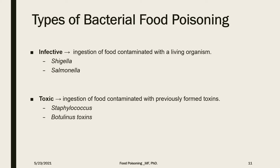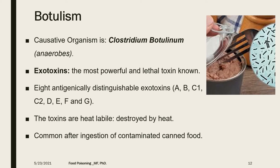Examples of toxic bacterial food poisoning include staphylococcal toxins and botulinum toxins. Botulism is a rare but very severe disease caused by Clostridium botulinum, an anaerobe that produces an exotoxin — the most powerful and lethal toxin known. These toxins are heat labile, so they are destroyed by heat, and contamination most commonly occurs through canned food, especially homemade food.